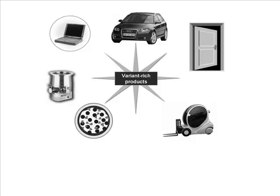This is a grab bag of different topics. First we looked at the document management system, then the PLM interface, then classification, and now we're looking at another topic. Several products have many different variants. For example, you can order a pizza and select the toppings, the type of cheese, the type of base, etc. Or when buying a car, you select all kinds of features. These are called variant products.